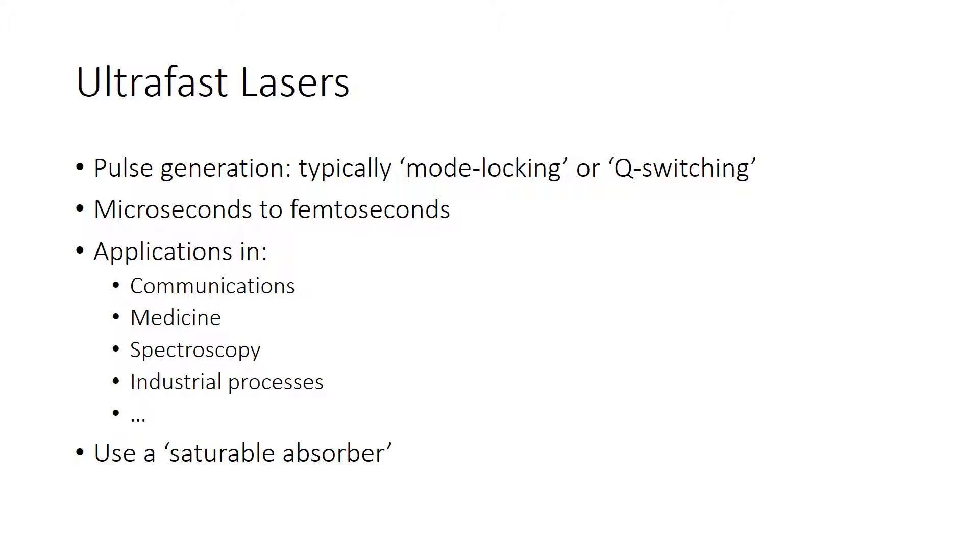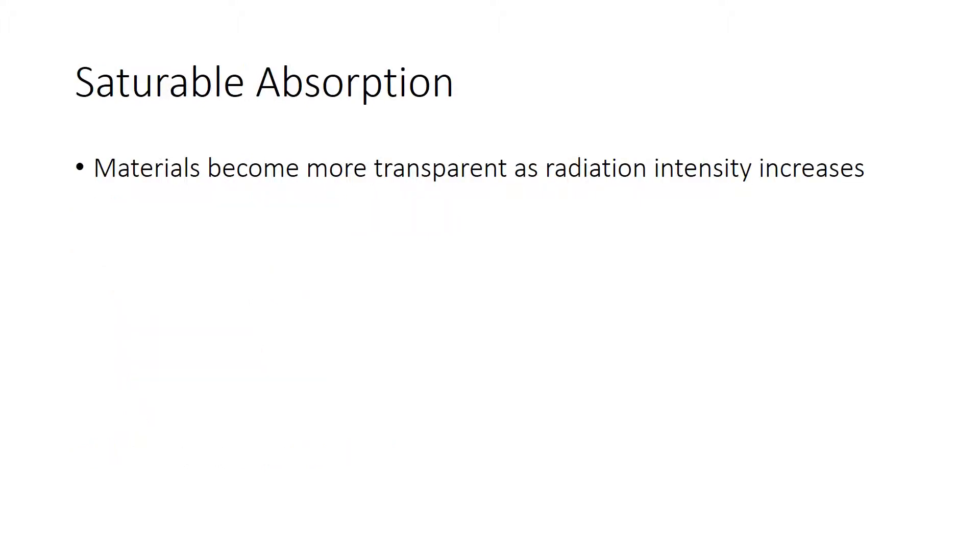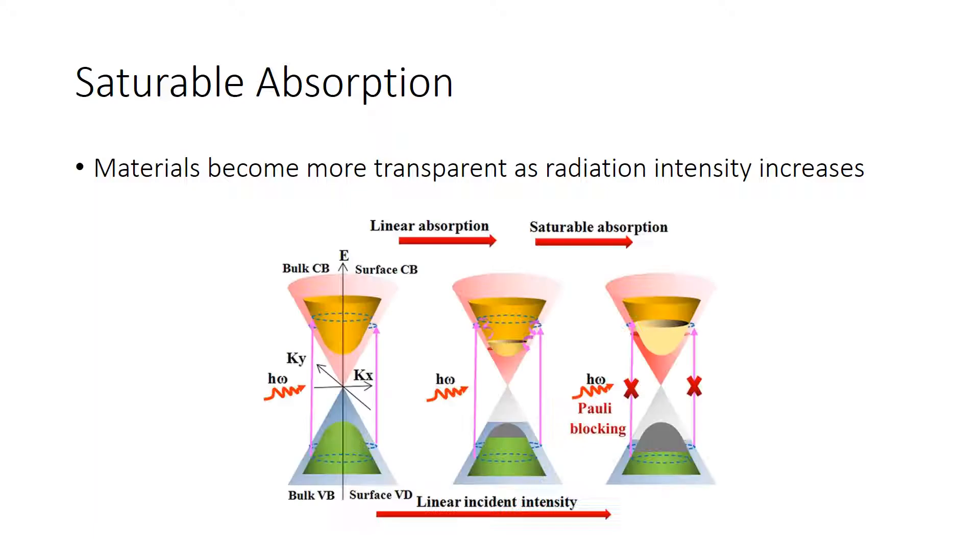All these types of lasers use a saturable absorber. Saturable absorption is a process where materials become more transparent as radiation intensity increases. So what happens within a material is that as the radiation hits the material, carriers are promoted to an excited energy level.